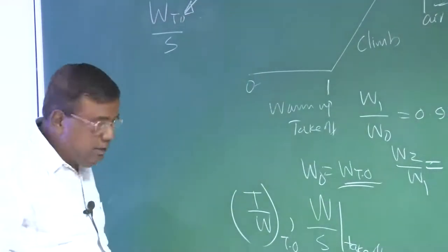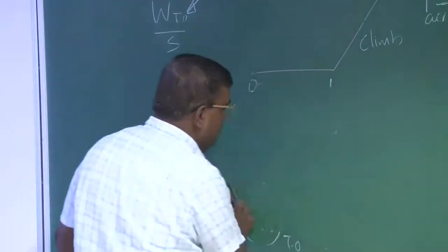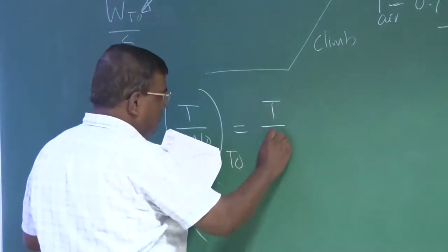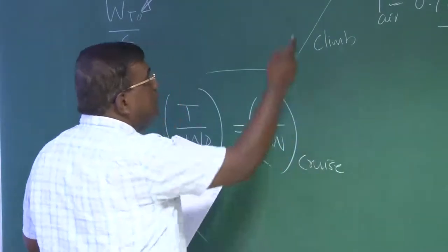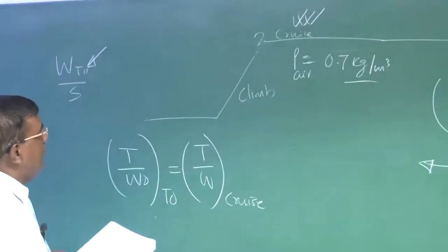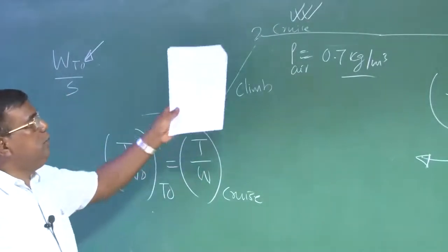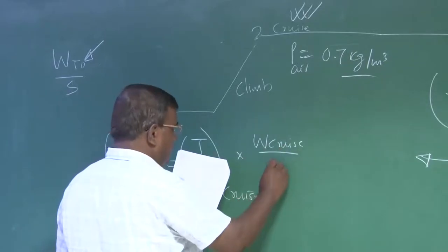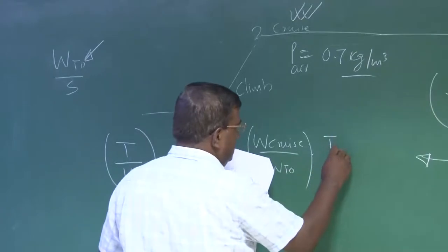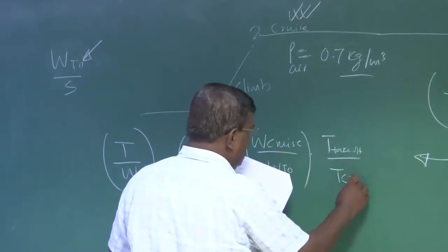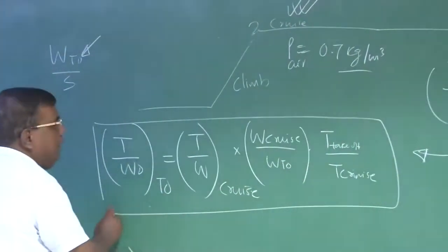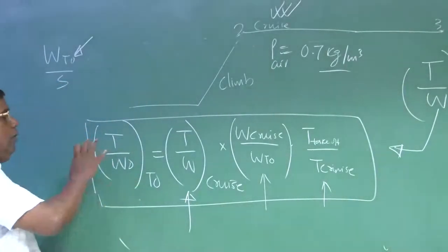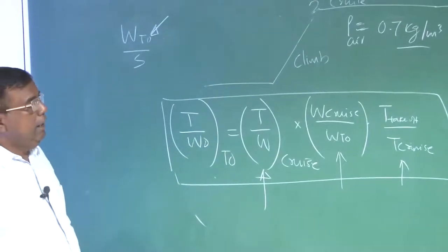You correct the thrust using a chart — generally it follows density at altitude divided by density at sea level, because as you go higher density reduces and thrust changes. The engine manufacturer provides calibration charts, but as a designer you know roughly it follows that relationship. You pick your initial conceptual design based on this, then check the charts available. In a nutshell, T by W takeoff equals T by W cruise, multiplied by (W cruise / W takeoff) multiplied by (T takeoff / T cruise). You should have numbers for these factors to know how much T by W the engine must deliver at sea level.